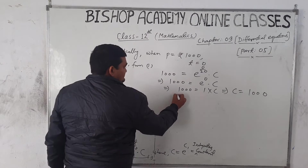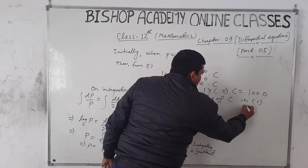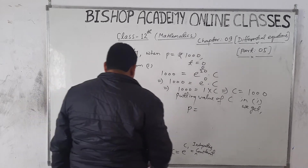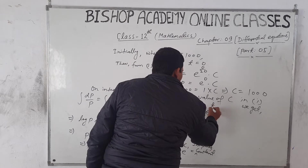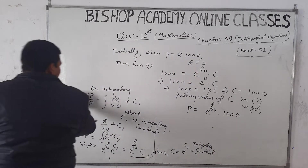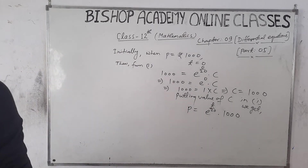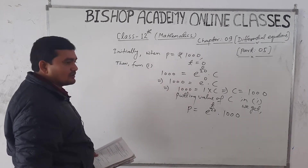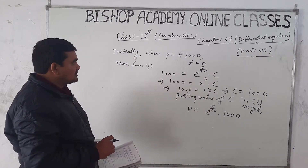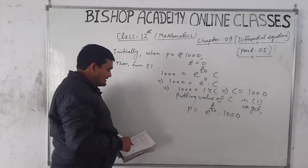Putting the value of C in equation number 1, we get P = 1000 × e^(T/20). Now we need to find the time when the principal doubles. The initial principal was rupees 1000, so we need to find the time when P = rupees 2000.